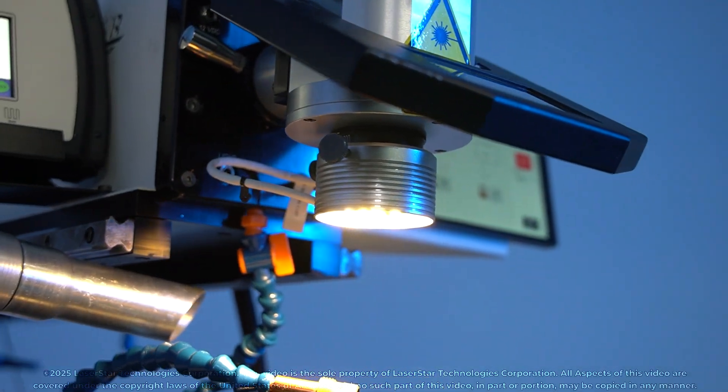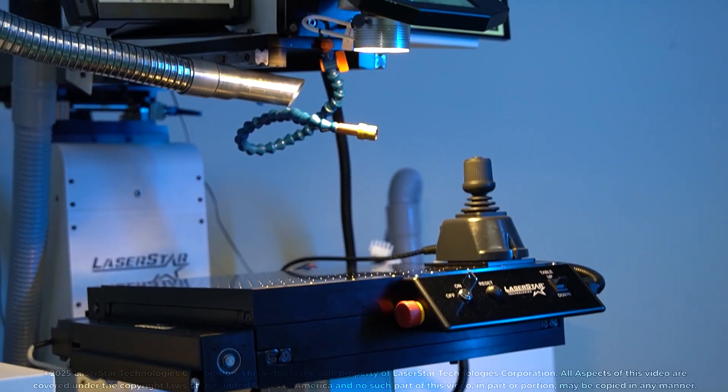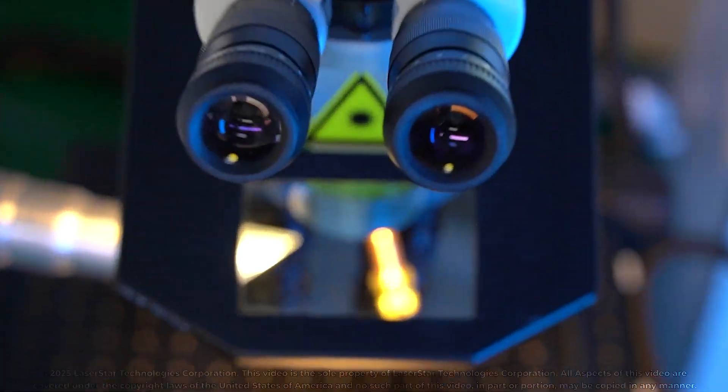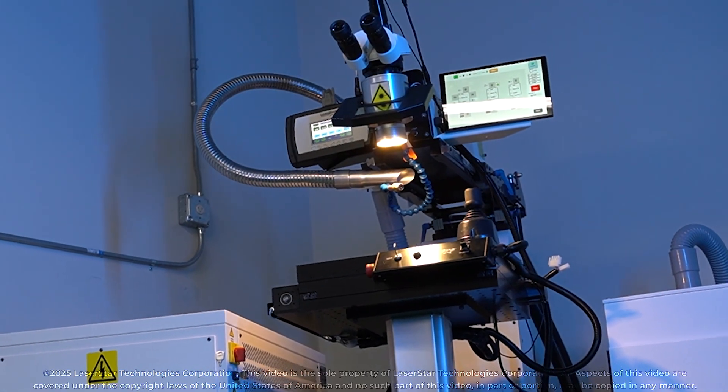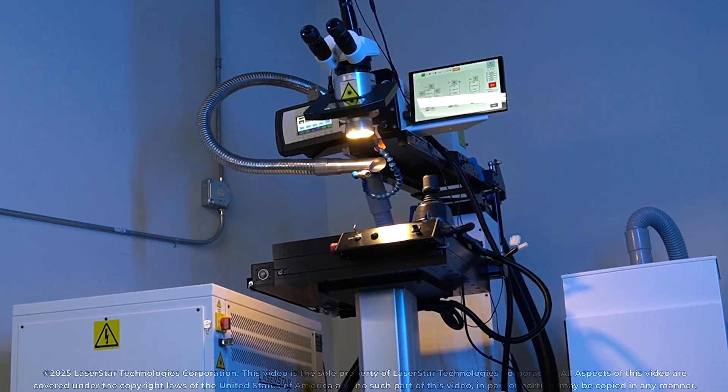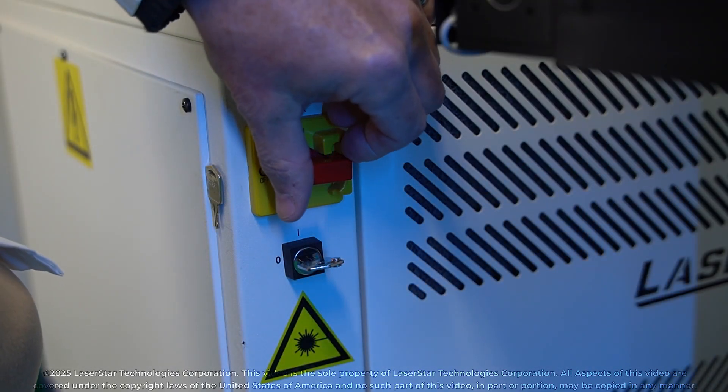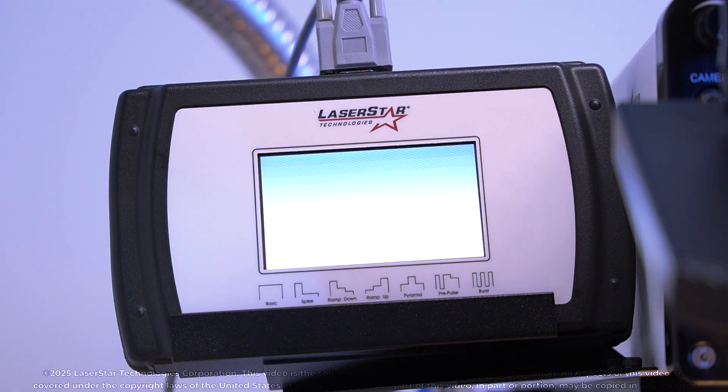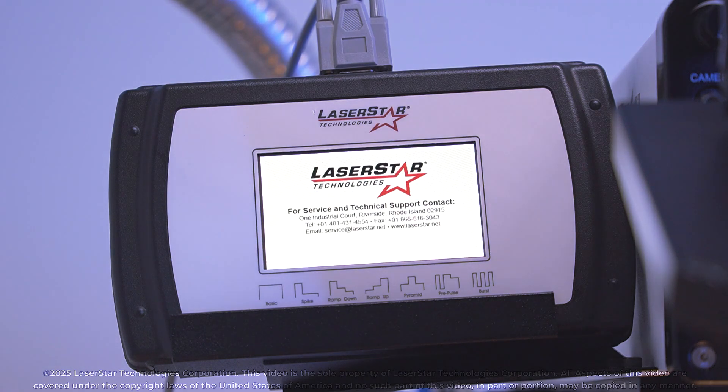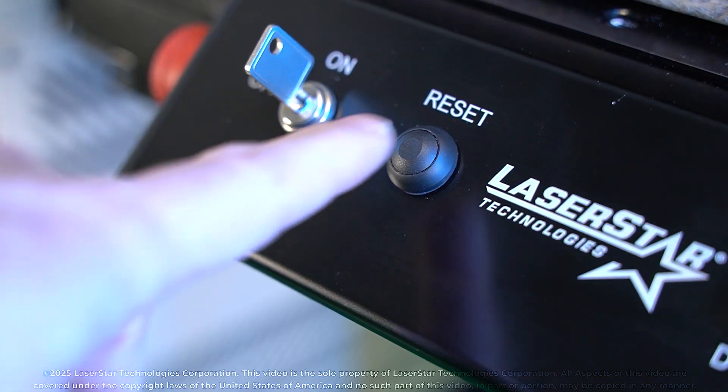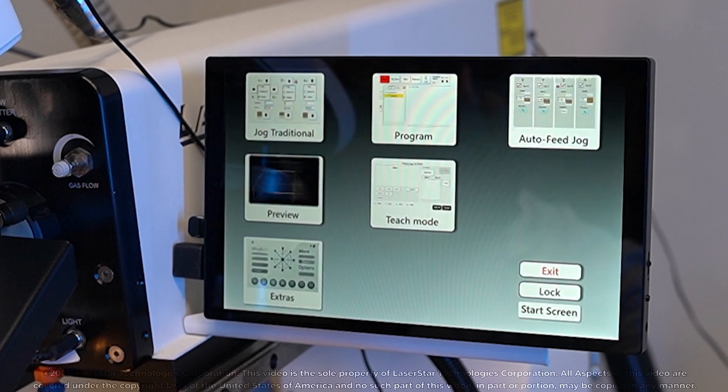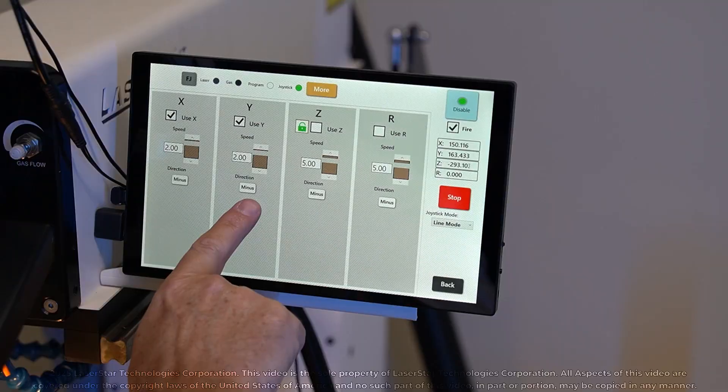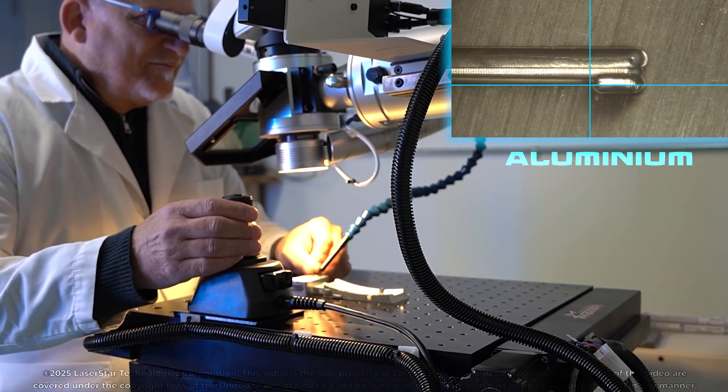The 7803 and 8803 series CNC industrial welding workstations are robust open-style laser systems ideal for any industry. Built on the same platform, the 7803 series has an ND-YAG laser source while the 8803 series is equipped with a fiber source. Both machines can be operated in manual, semi-automatic, or fully programmable welding environments.